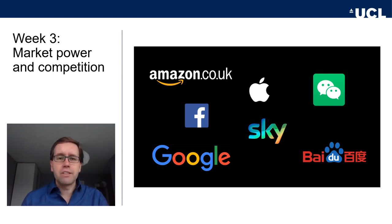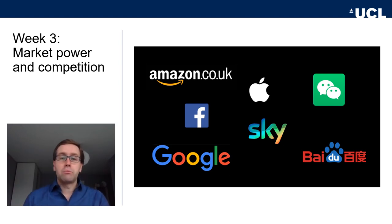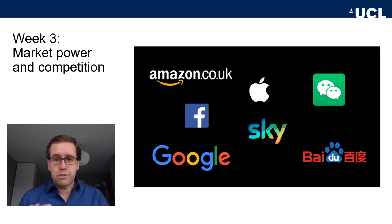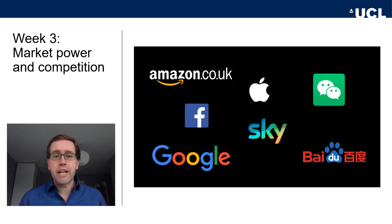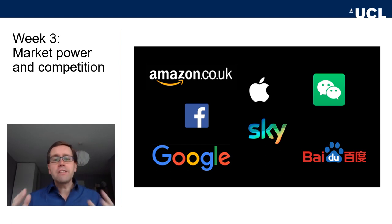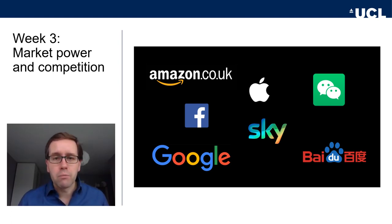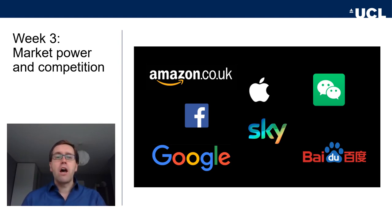Another example: I like watching Arsenal play on TV, and to do that I need a Sky subscription because there is no alternative — it's not on TV anywhere else. I cannot buy an alternative provider of Arsenal matches. These are all examples of firms with enormous market power, and in some cases monopolies. And that's the topic of today's lecture.